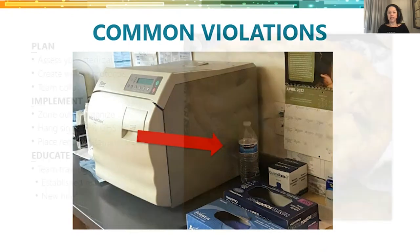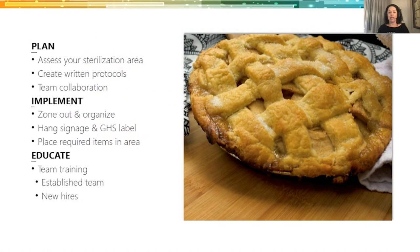In summary, think of PIE — Plan, Implement, Educate. Plan: look at your area and plan it out. Implement: zone everything out, organize it, get all mandated equipment in place, make sure everything is in the required zones. Educate: everybody needs to be educated on the new workflow. Make sure your established team and new hires know the reprocessing protocol, what the sterilization area looks like, and how to flow in that area.